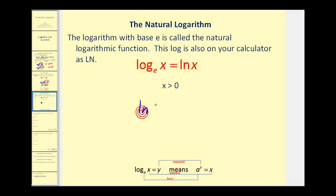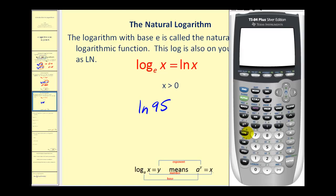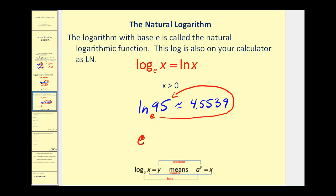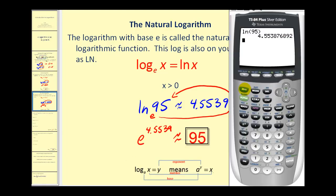For example, if we type in natural log of 95 on the calculator — here's the natural log key — we're going to get a decimal approximation: it's approximately 4.5539. Natural log means log base e, so that means e to the power of 4.5539 is approximately equal to 95. We did round this, so it won't be exact, but if we press second natural log and type in the exponent, you can see it's approximately 95.